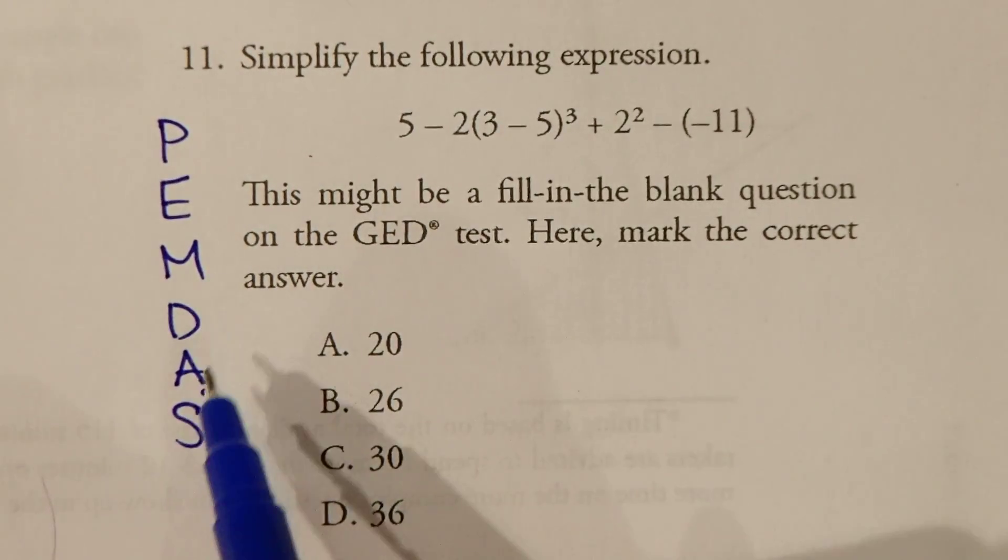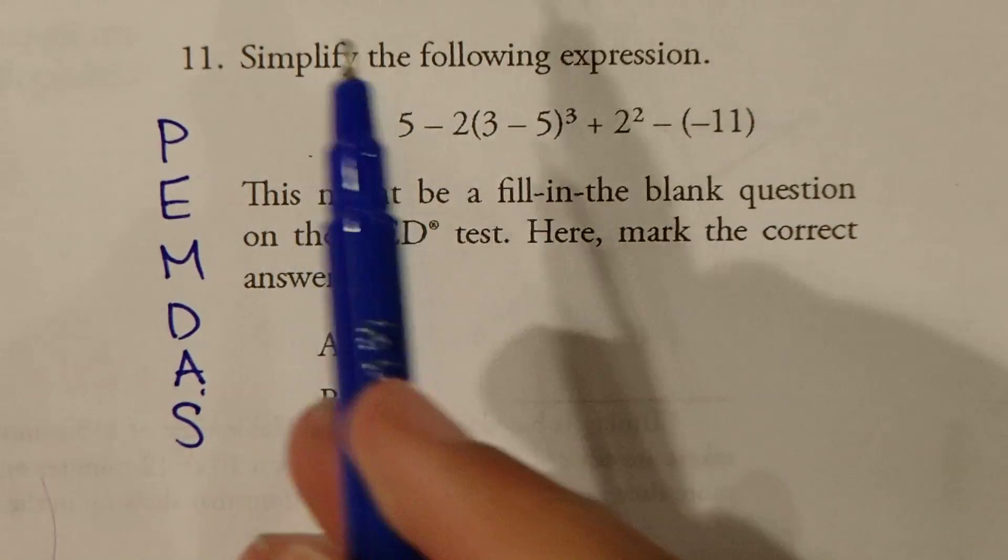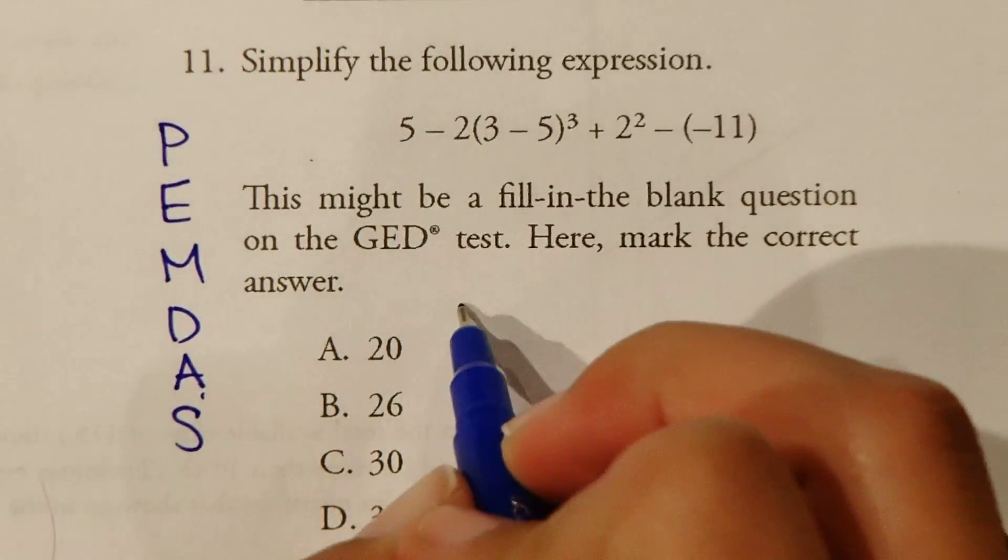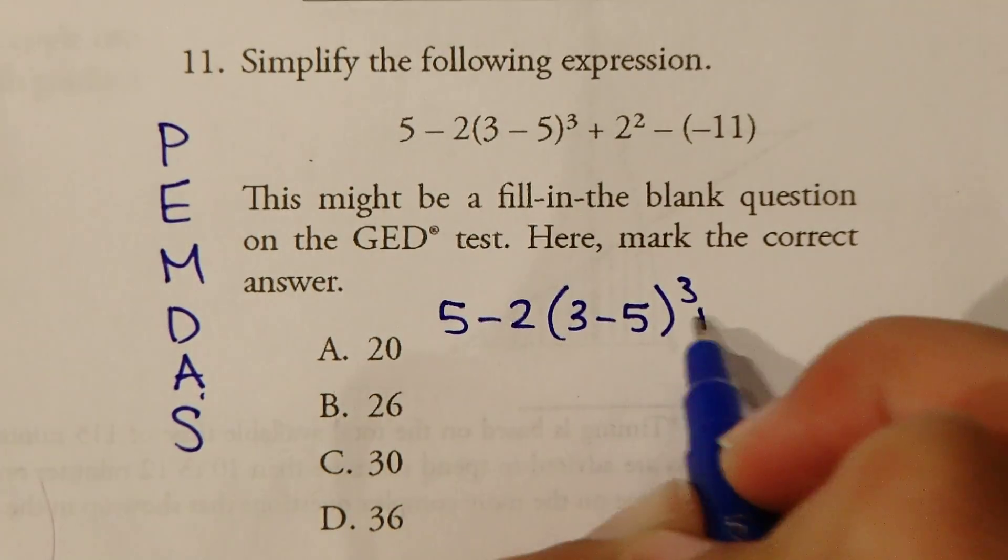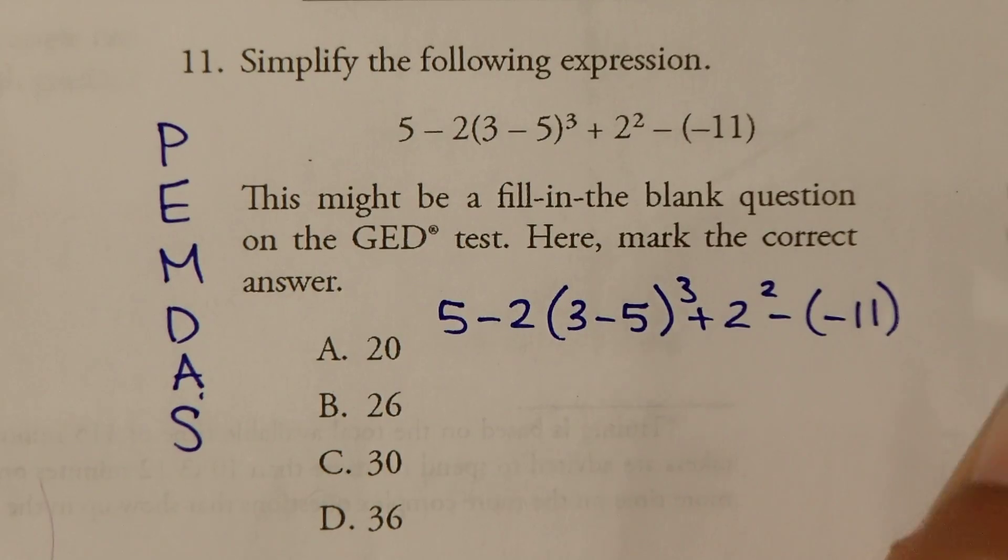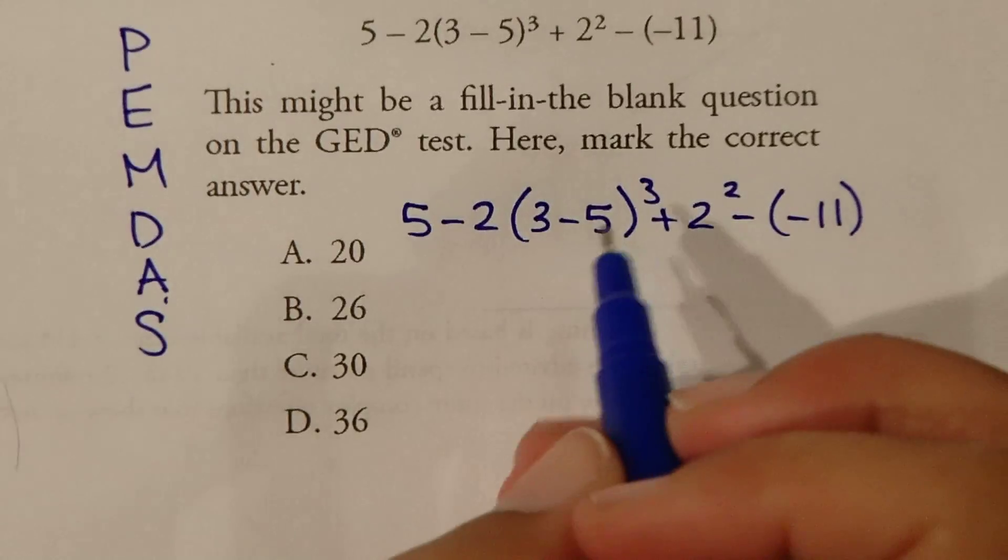Parentheses, exponents, multiplication, division, addition, subtraction. So these must always be done in this order first, top to bottom. So I'm going to rewrite this. And we're going to solve it based on the order of operations. So first thing is P, parentheses.